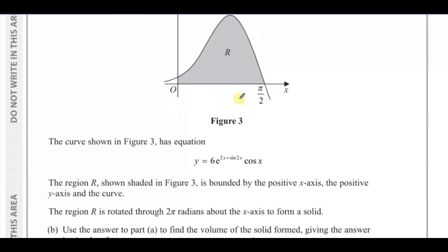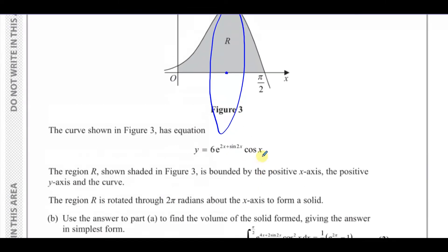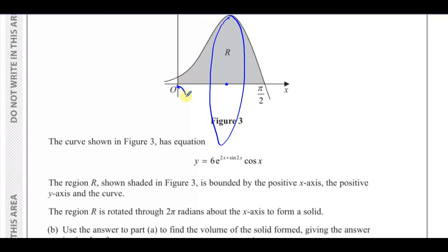The region R is rotated through 2π around the x-axis, one whole revolution. This is going to form a solid of revolution, some weird kind of three-dimensional lamp-shaped or bowl-shaped object.